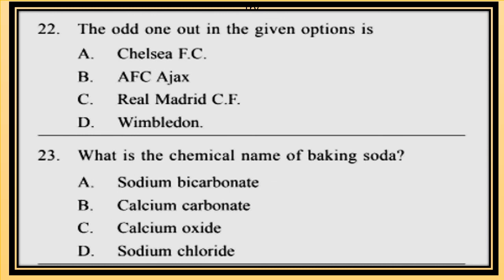Question 22. The odd one out in the given options is: A. Chelsea FC, B. AFC Ajax, C. Real Madrid CF, D. Wimbledon. Question 23. What is the chemical name of baking soda? A. Sodium bicarbonate, B. Calcium carbonate, C. Calcium oxide, D. Sodium chloride.